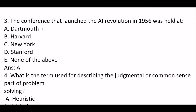Next question: the conference that launched the AI revolution in 1956 was held at — Option A: Dartmouth, Option B: Harvard, Option C: New York, Option D: Stanford, Option E: none of the above. The right answer is Option A — the conference was held at Dartmouth.